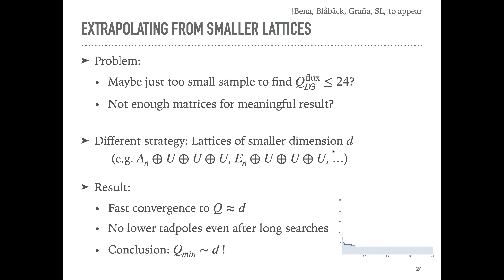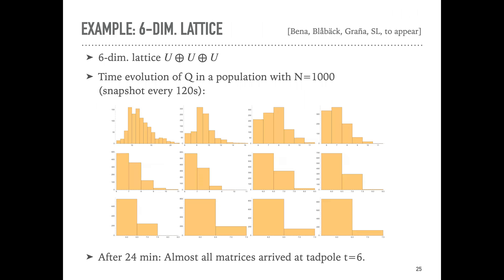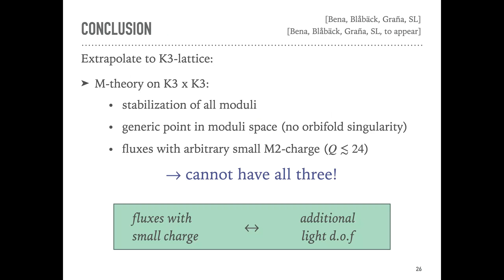The results on smaller lattices are consistent with our K3×K3 result and provide strong evidence for the conjecture, even though this is not a proof. To summarize the K3×K3 results: for M-theory or F-theory on K3×K3, wanting to stabilize all moduli at a generic point in moduli space with arbitrary small flux charge Q ≤ 24 — it turns out one cannot have all three simultaneously. If one demands a small flux charge, there are always additional light degrees of freedom, either from non-stabilized moduli or from singularities.